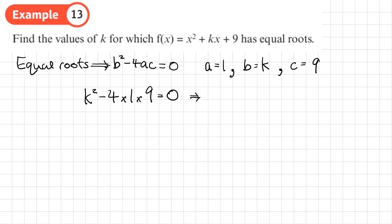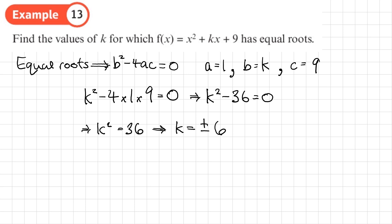That gives us k squared minus 36 equals zero. Rearranging: k squared equals 36, so k equals plus or minus 6. The question asks for values of k — plural — which is consistent with getting both a positive and negative answer. So k equals 6 or k equals negative 6. Using the discriminant here is almost like solving an equation.